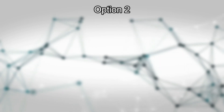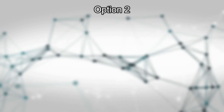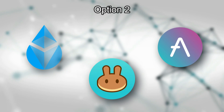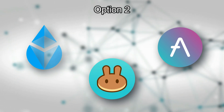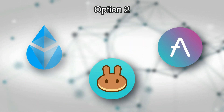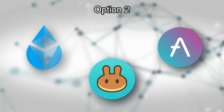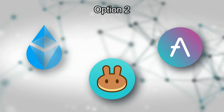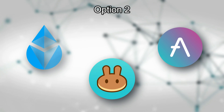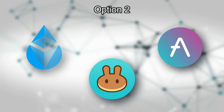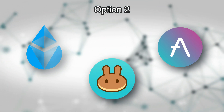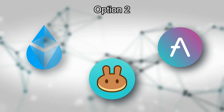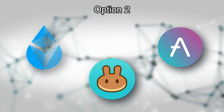Option number two is to use one of the many in-wallet apps like Lido, PancakeSwap, or Aave, and you can stake on those apps. With your WalletConnect feature, you can link up to any of the available apps and stake from there. This really comes down to personal preference — if you prefer direct staking within your wallet, go with option one. If not, you can go with some of those other options.